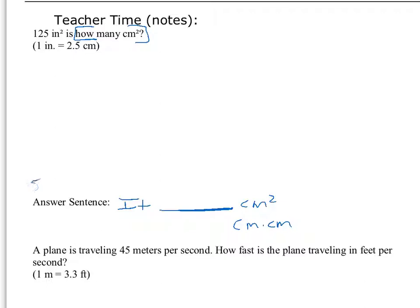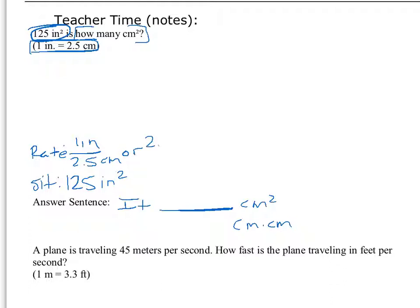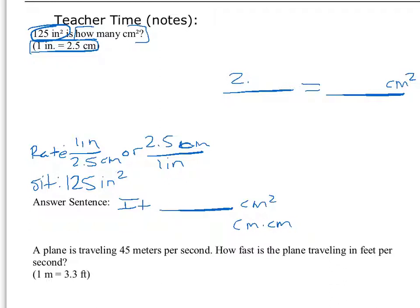We're given 125 square inches, which is inches squared. We're also given a rate: 1 inch over 2.5 centimeters, or we could write it the other way — 2.5 centimeters over 1 inch. We want our answer to be centimeters squared, and we need to keep in mind that centimeters squared is the same thing as centimeters times centimeters. Looking at what we want, we want centimeters on top, so we'll use 2.5 centimeters over 1 inch.